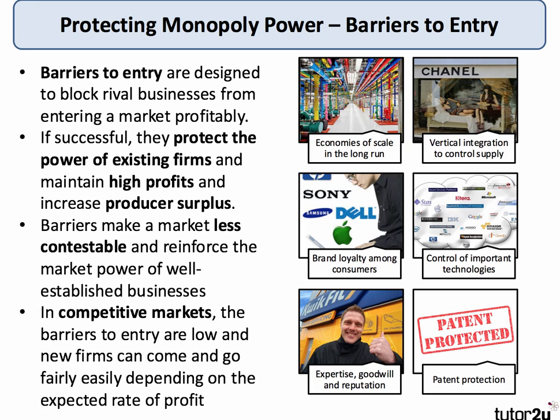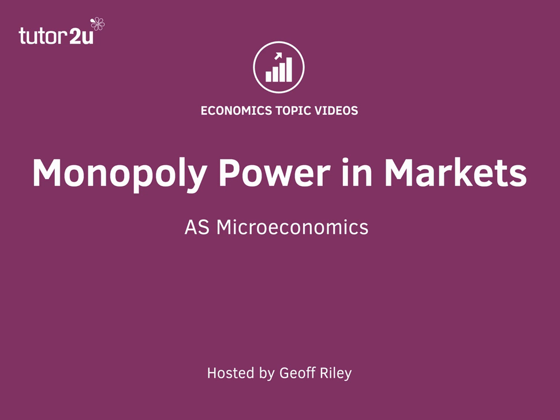In contrast, in competitive markets where there's less concentrated market power, the barriers to entry are pretty low and new businesses can and often do come and go quite easily, driven by the profit motive. The main barriers to entry include: economies of scale, which help big businesses get long-term unit costs down; vertical integration, which gives businesses control over the supply chain; control of important technologies through patents; and significant consumer or brand loyalty, which makes it harder for new firms to enter. Big businesses can also build up expertise, reputation, and consumer goodwill, as well as having legal protection through patents. So this is just a brief introduction to the aspects of monopoly power in markets as part of your AS Micro.